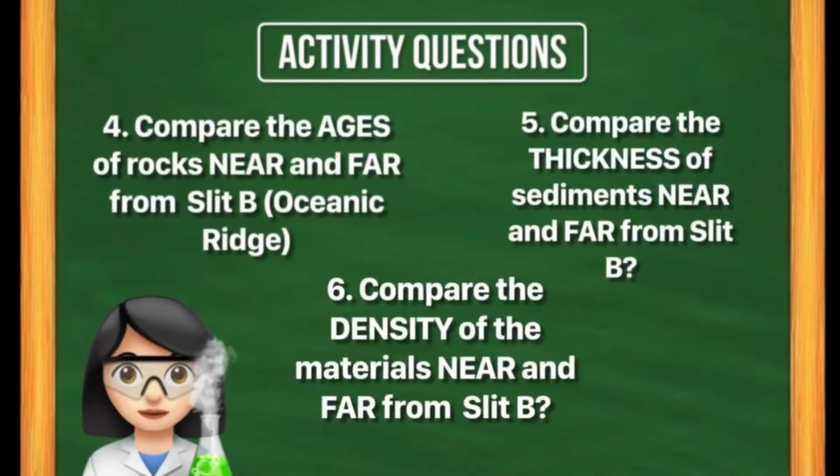Activity questions: Number 4, compare the ages of rocks near and far from slit B. Number 5, compare the thickness of sediments near and far from slit B. Number 6, compare the density of the materials near and far from slit B.